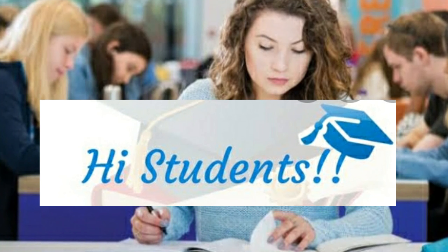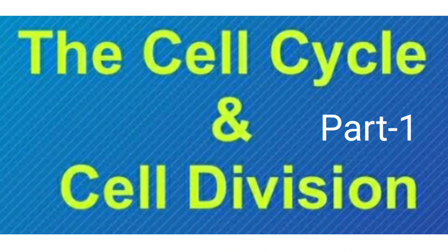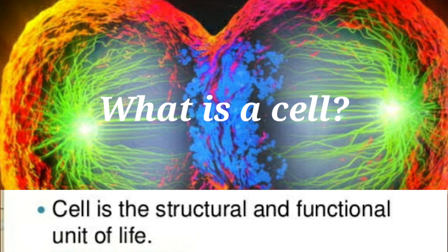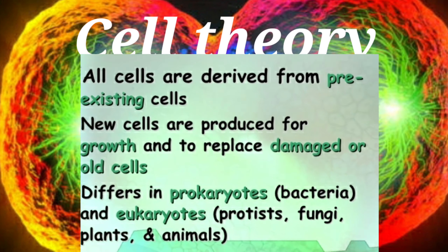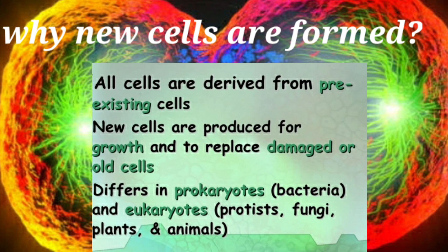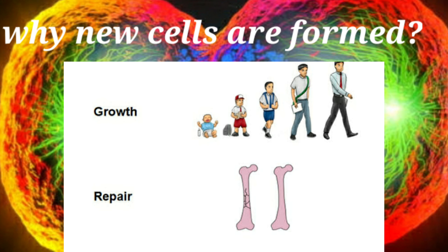In this video we shall learn about cell cycle and cell division. A cell is the structural and functional unit of all living organisms. According to cell theory, all cells are derived from pre-existing cells. New cells are produced for growth and to replace damaged or old cells.